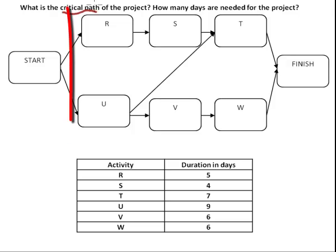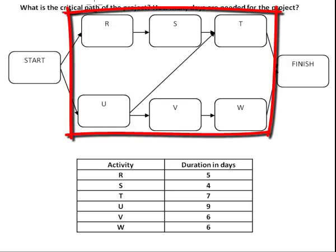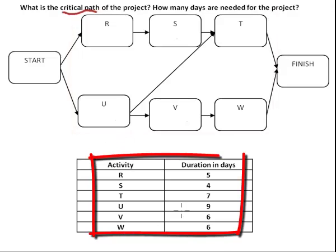First of all, we are given this network diagram with a bunch of activities on it. Activities are R, S, T, U, V and W. And below in this table, we are given duration for each activity.